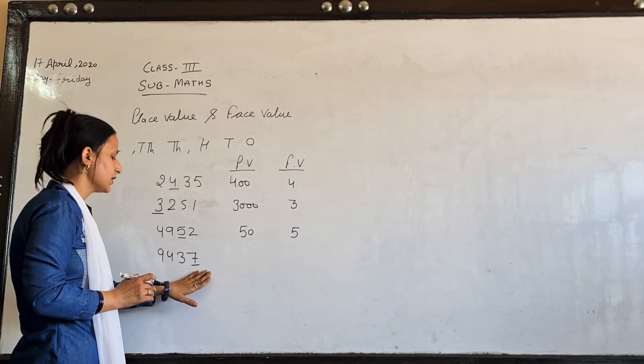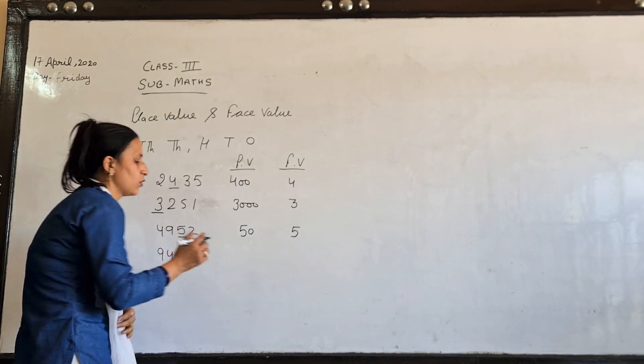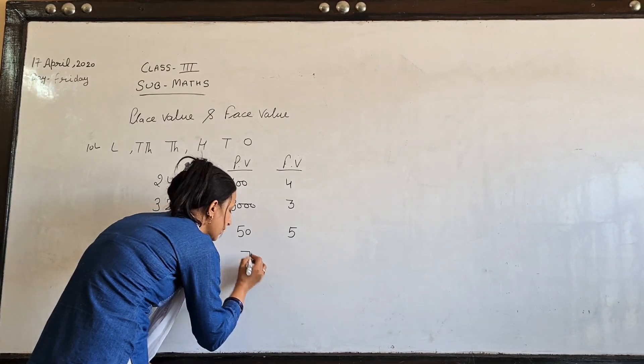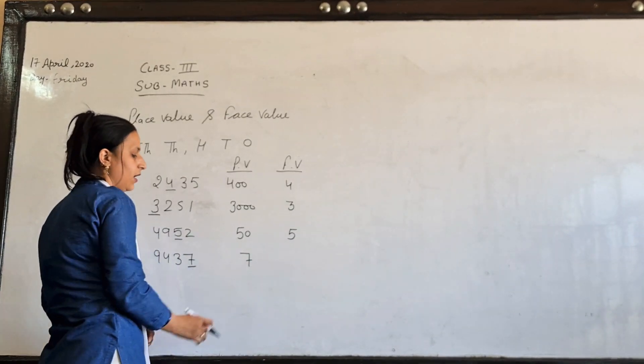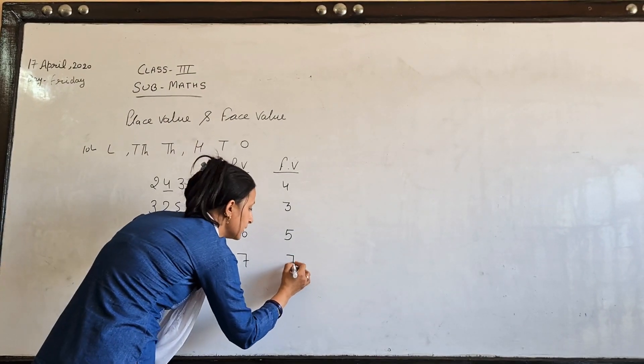Once place per is once, so it will not be 0. This once place is 7 and the face value is 7.